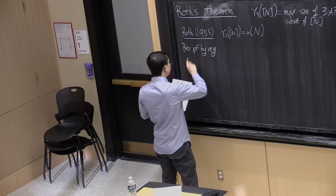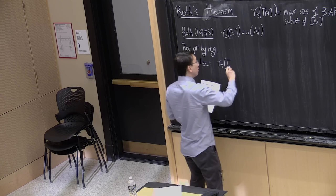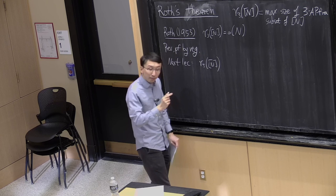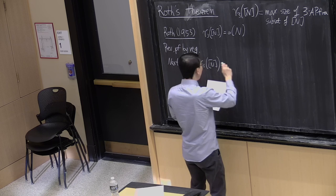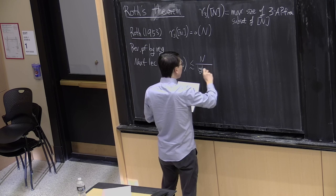Next lecture we'll show the bound. By regularity we get some bound which is little-o of n, but because of the use of the regularity lemma it's a pretty poor dependence — something like n over log* n. Roth's original proof gives you a bound of n over log log n, which is a much more reasonable bound.